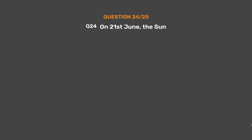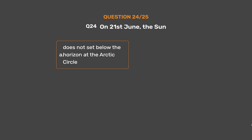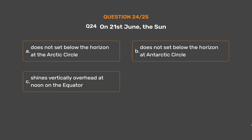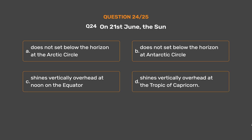Question No. 24: On 21st June, the Sun ___. Option A: Does not set below the horizon at the Arctic Circle. Option B: Does not set below the horizon at the Antarctic Circle. Option C: Shines vertically overhead at noon on the equator. Option D: Shines vertically overhead at the Tropic of Capricorn.